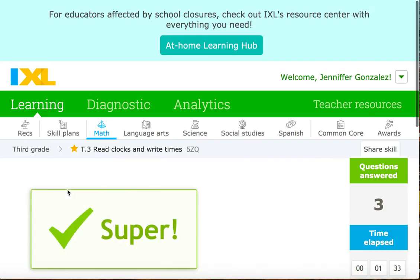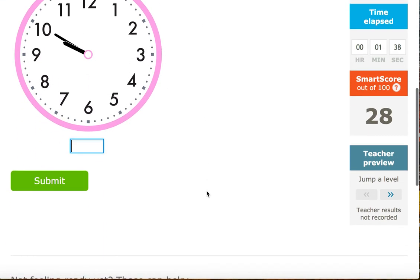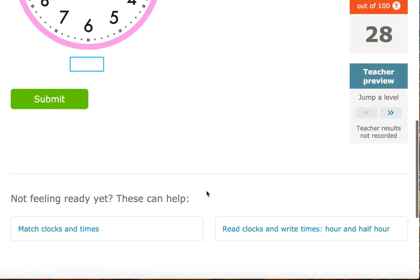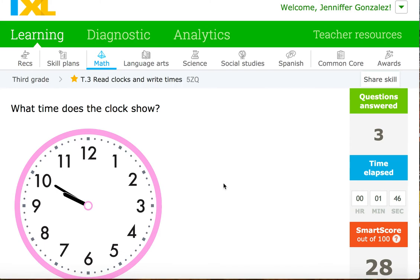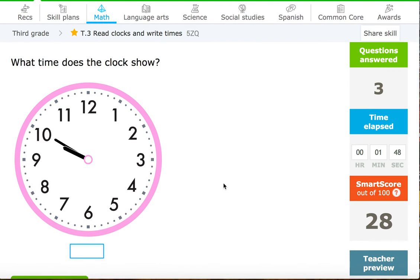So boys and girls practice this skill. I believe in your app, you are allowed to write on the actual screen. Since I have the teacher model, I cannot write. But you can practice labeling the clock as you solve. Ideally, that's what I want you to do.